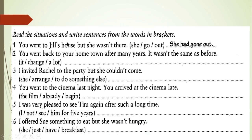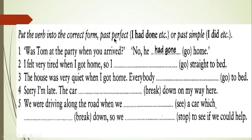Here is a simple activity. Read the situations and write sentences from the words in brackets. For example: 'You went to Jill's house but she was not there' — from the given words we make a past perfect sentence: 'She had gone out.' Another example: 'You went back to your hometown after many years. It was not the same as before' — answer: 'It had changed a lot.' Make sentences for the remaining words yourself to practice the structure. Also, put the verb into the correct form — past perfect or past simple. For example: 'Was Tom at the party when you arrived? No, he had gone home.' Complete the rest of the blanks yourself to practice.